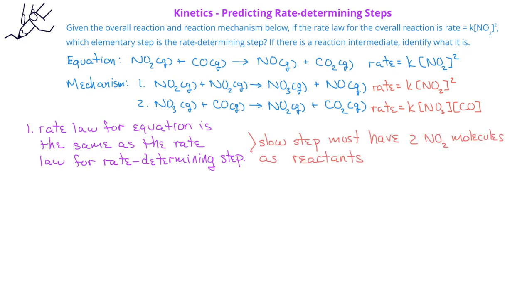In this case, the only step in the mechanism that has two molecules of NO2 reacting is the first step in the mechanism. So we know that in this case, the first step in the mechanism is the slow rate determining step.